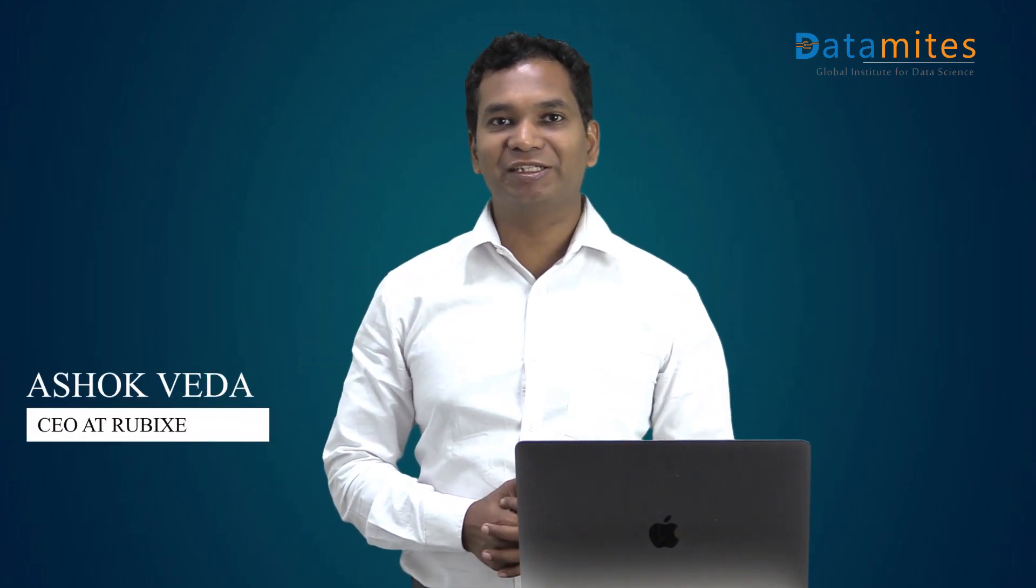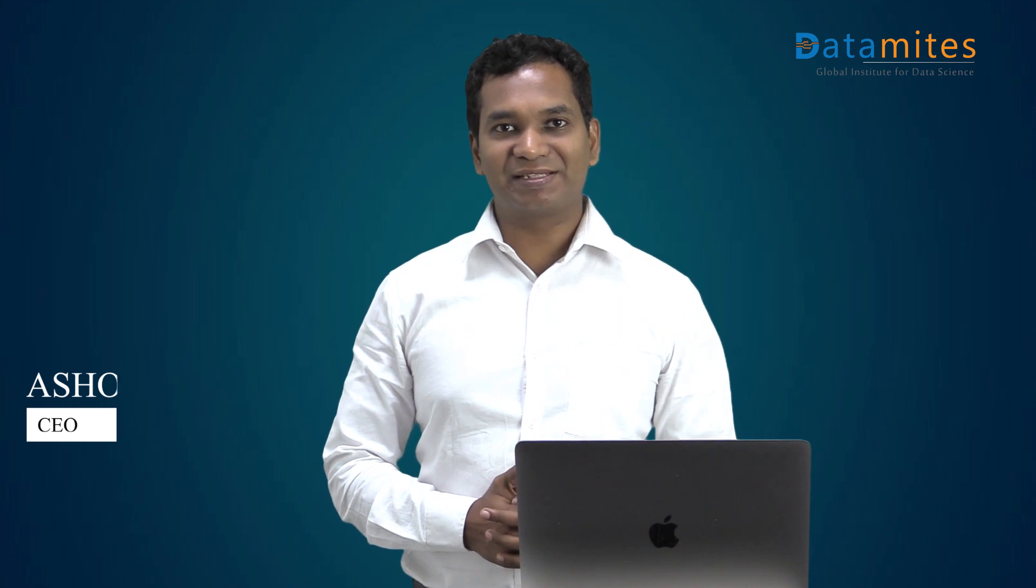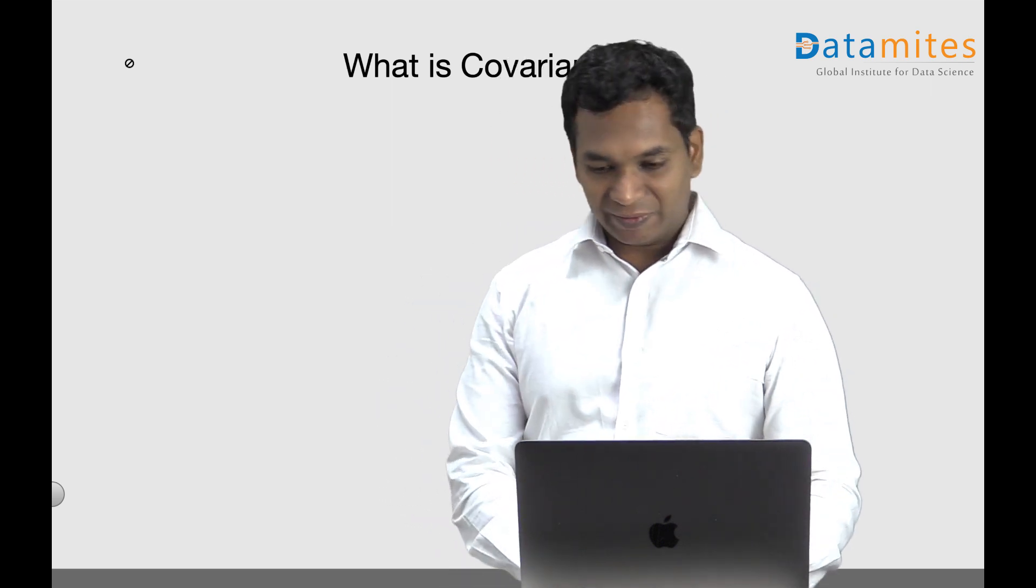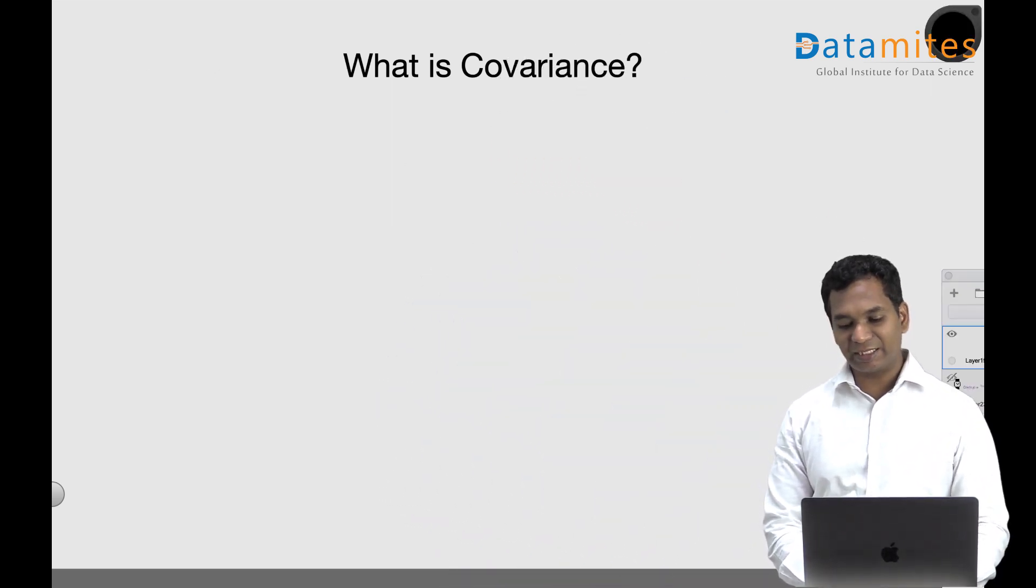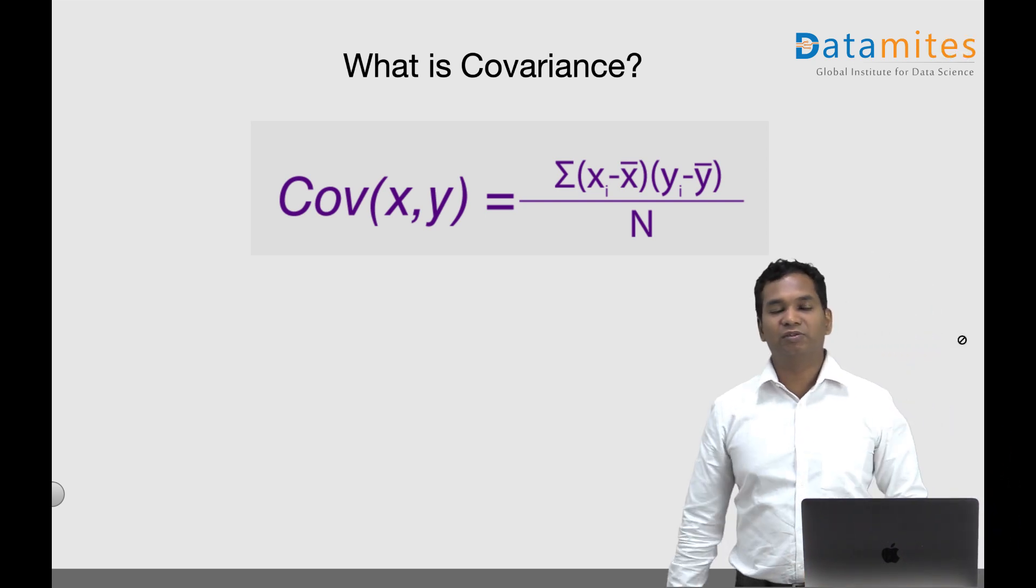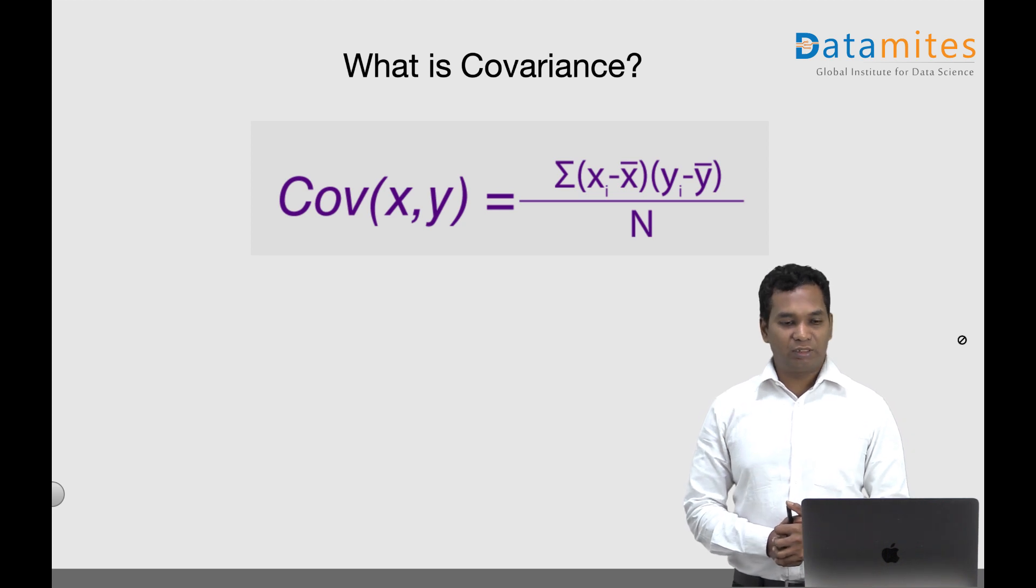Hello everyone, I'm Ashok. Welcome to another video on machine learning data science terminology series. In this video we shall look at the term covariance. Covariance is a statistical measure for finding relation between two random variables.